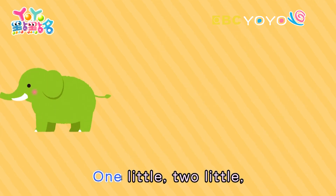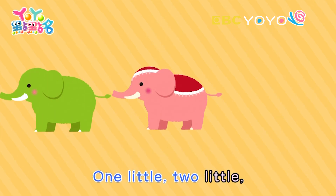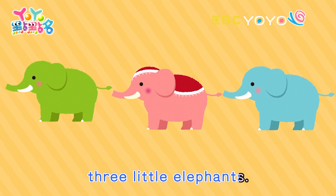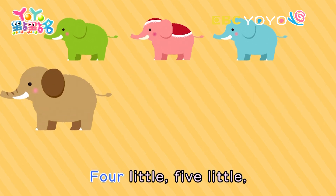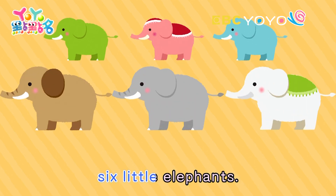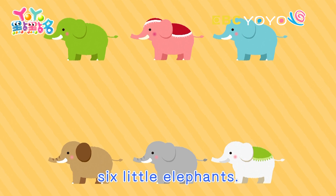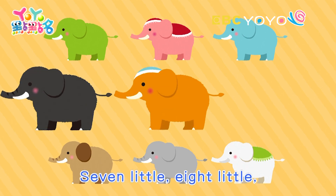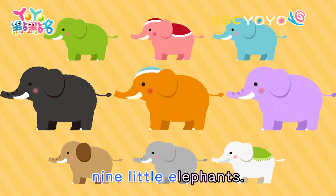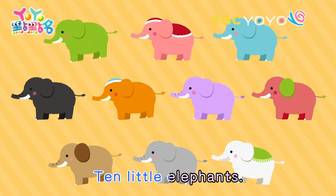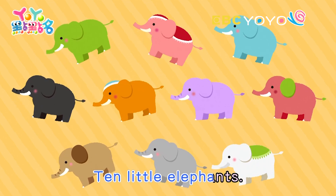One little, two little, three little elephants. Four little, five little, six little elephants. Seven little, eight little, nine little elephants. Ten little elephants.